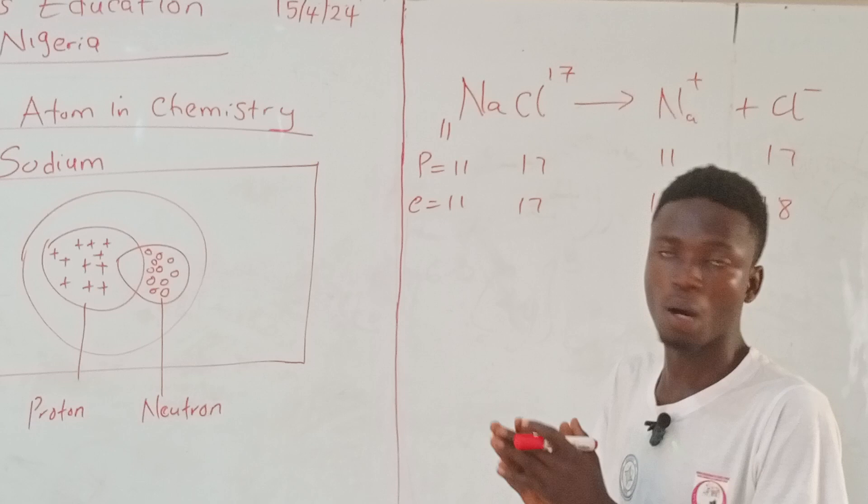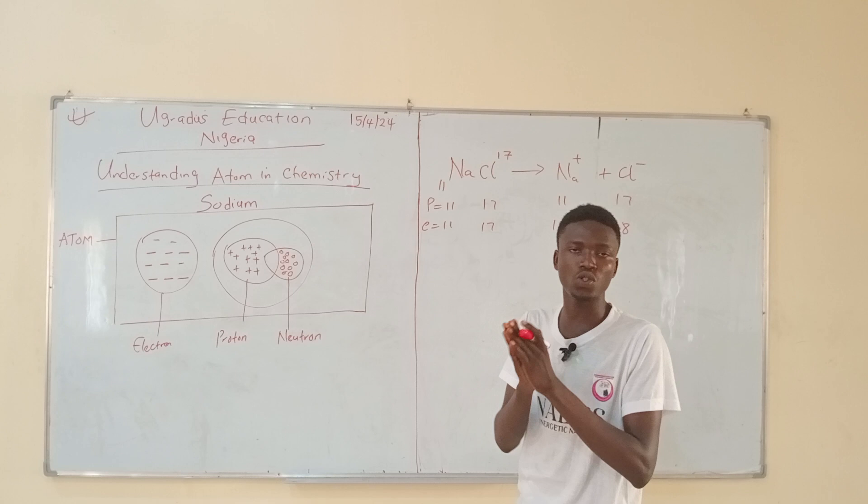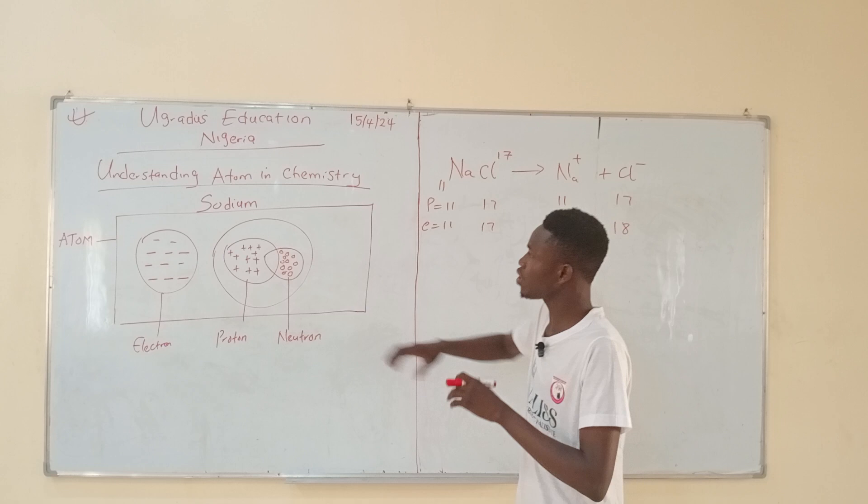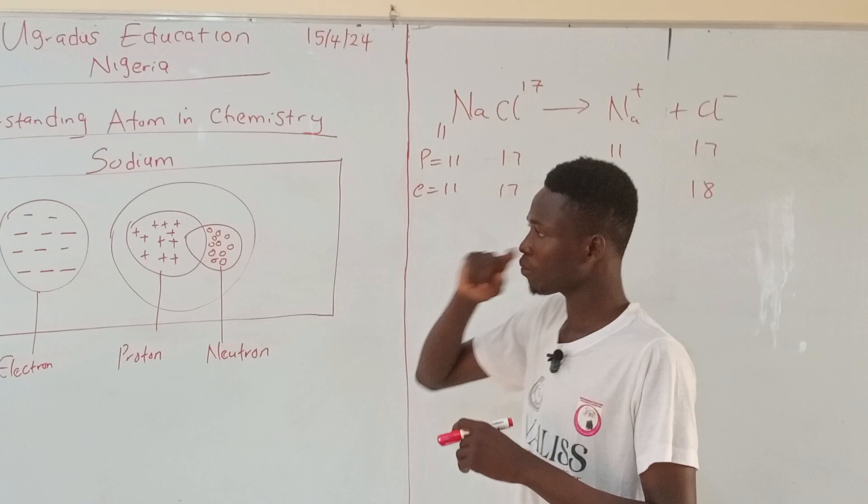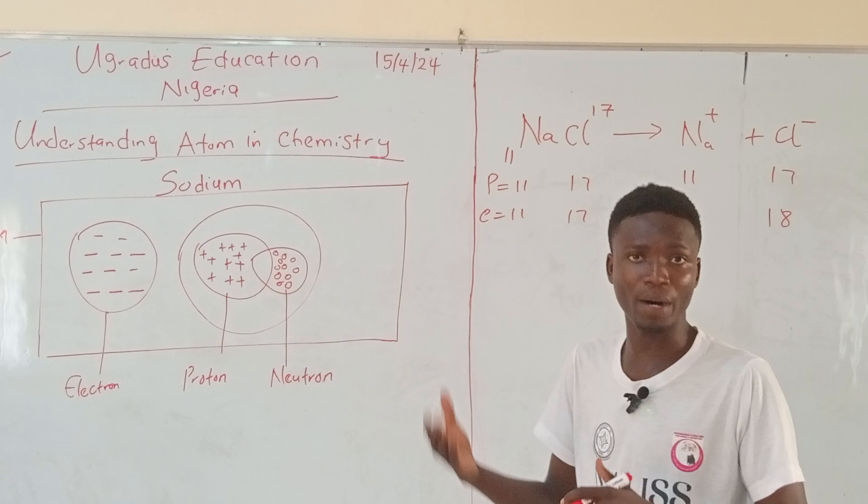I decided to use a rectangle because I want you to get it in the very best way. But just know that at the back of your mind, atom is spherical. So atom is like this box that contains three subatomic particles.